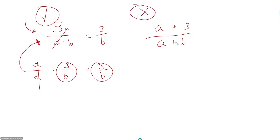Now, what you never want to do is this: if you are given a fraction such as (a + 3) all over (a + b), you never want to split your denominator. If you do that, you will go straight to GMAT jail and nobody, including myself, will have any sympathy for you. If you cancel out this a and say this equals 3 over b — well, does this make any sense? I'm always astounded when people do this.